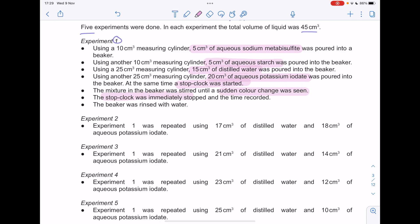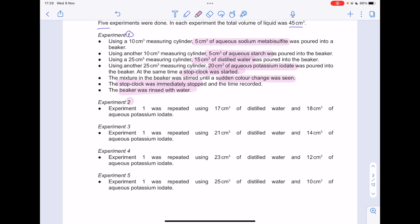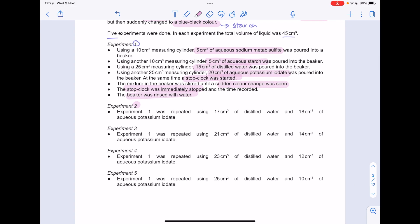The stop clock was stopped and the time recorded, the beaker was rinsed with water to clean. In experiment two, it's all the same methodology. However, this time we've got 17 centimetres cubed of distilled water, 18 centimetres cubed of potassium iodide. In experiment three, we've increased that distilled water further whilst decreasing the potassium iodide. In experiment four, we see more of the same. In experiment five, all water and very little potassium iodide.